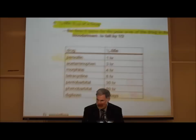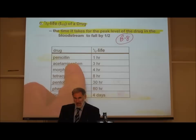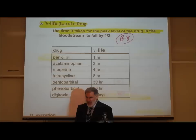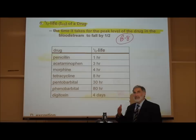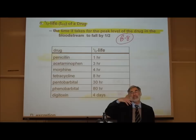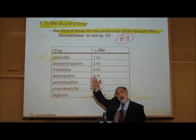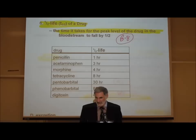Drugs vary a great deal in their half-life. On page B8, the half-life for penicillin is one hour, whereas the half-life for tetracycline is eight hours — both are antibiotics. This explains why you commonly have to take penicillin three or four times a day, whereas with tetracycline you might only have to take it once or twice a day. That is simply affected by how quickly certain drugs are metabolized and excreted from the body.